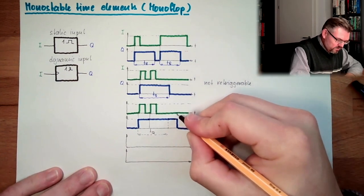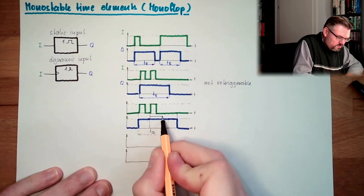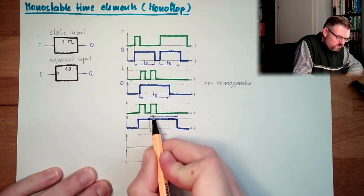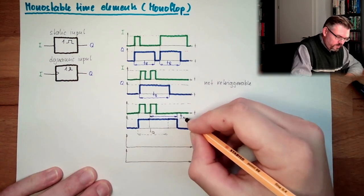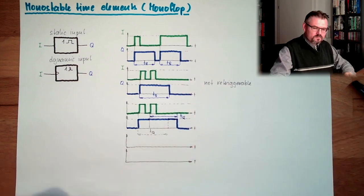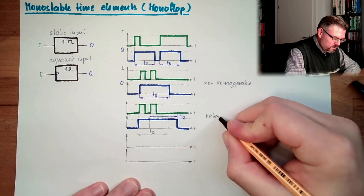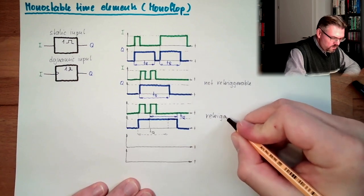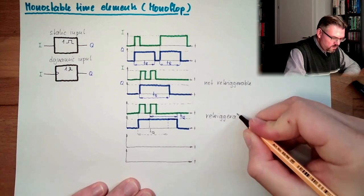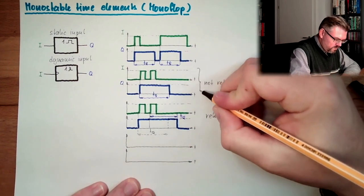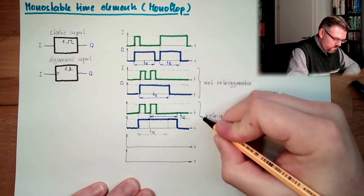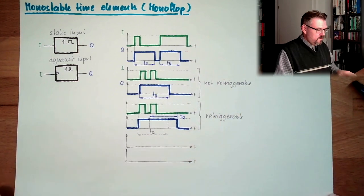Here actually, we also have dq. Okay? This here is retriggerable.